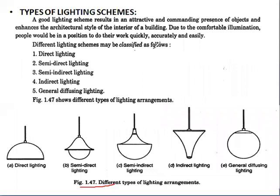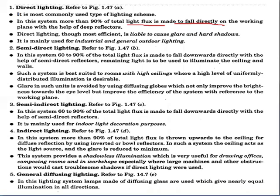Now, the types of lighting schemes. A good lighting scheme results in an attractive and commanding presence of objects and enhances the architectural style of the interior of a building. Due to comfortable illumination, people are in a position to do their work quickly, adequately, and easily. There are five different lighting schemes: direct lighting, semi-direct lighting, semi-indirect lighting, indirect lighting, and general diffusing lighting.